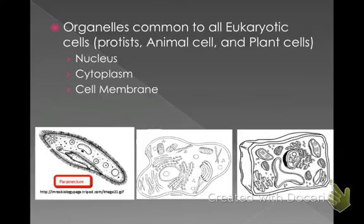The first is the nucleus. Here it is in your paramecium, here it is in an animal cell, and here it is in your plant cell. Remember that the nucleus is the brain of the cell — all of your DNA and other material is stored in there, so it controls all of the cell's functions.